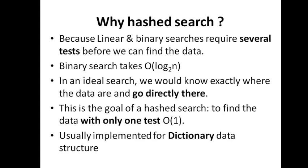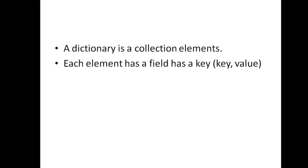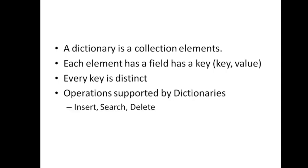Hashed search is generally implemented for a data structure called the dictionary. A dictionary data structure stores a collection of elements where every element has a pair of details: a key value and the actual value being stored. The key value identifies the value and is always unique or distinct. The dictionary commonly supports three operations: add a new element, search for an existing element, and remove an element.